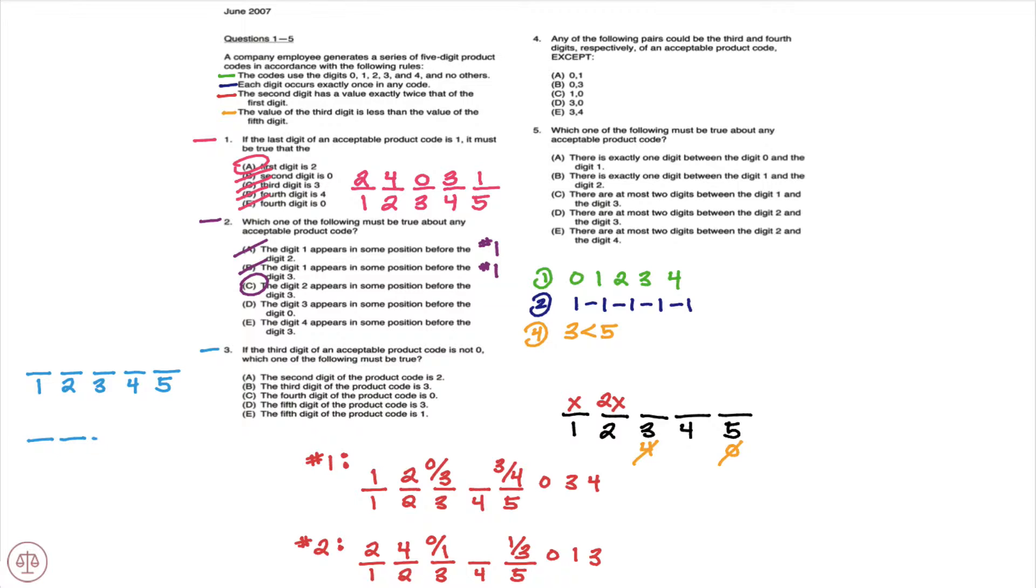So drawing out two possibilities. Now in scenario one, our options for the third spot are zero and three. Well if it's not zero, it's going to be three. And since the fifth digit must be greater than the third digit, or the third digit must be less than the value of the fifth digit, we know that four must be fifth. And we know one and two would be one and two, which puts zero and four.